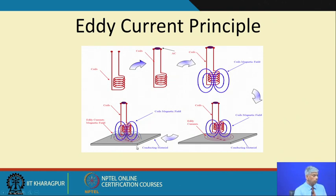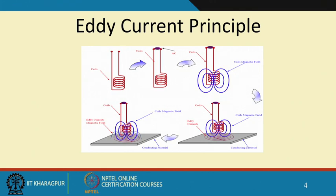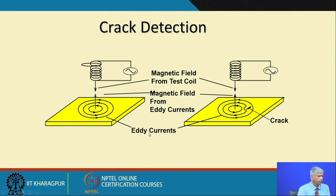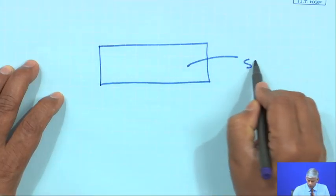The basic principle of eddy current is that the material must be conducting, unlike ultrasonic waves which can pass into any material. To detect a crack, I have a magnetic field from a test coil which I move close to the surface. The eddy current magnetic field is generated, and if there is a crack the intensity or magnitude of this eddy current is going to change qualitatively — this change can be sensed in the voltage measuring device, making it a very easy way to find out surface cracks.